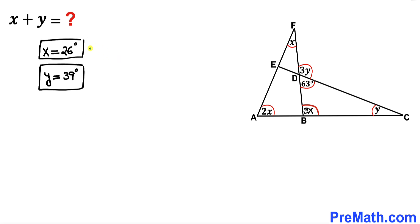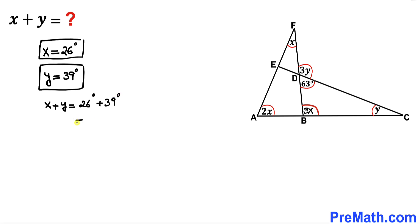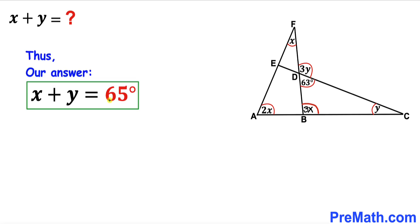We've now found x equals 26 degrees and y equals 39 degrees. Adding them up: angle x plus y equals 26 degrees plus 39 degrees, which gives us 65 degrees. So angle x plus y turns out to be 65 degrees — and that's our final answer.